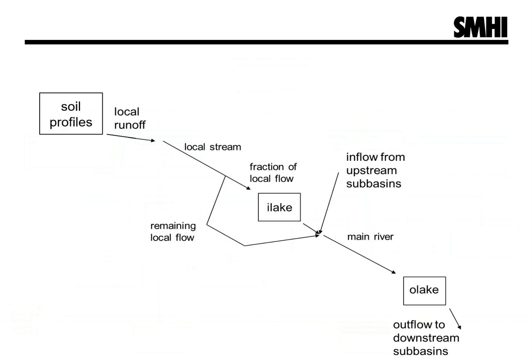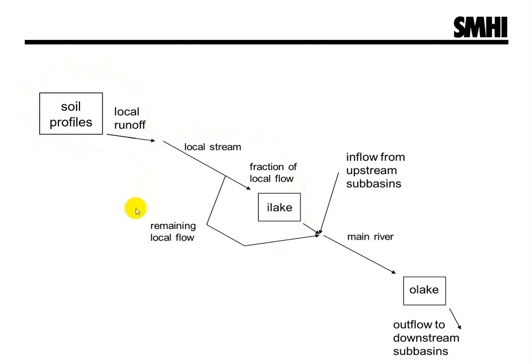The water flow in the soil and the local runoff from soil are calculated before any of the surface water. The local runoff flows through local streams and internal lakes — I-lakes — within the sub-basin.